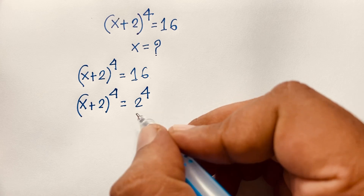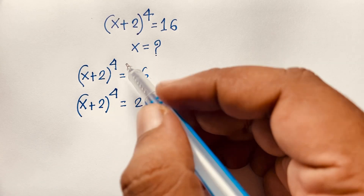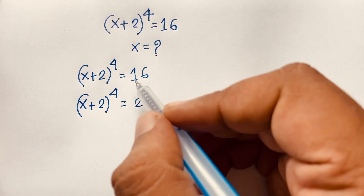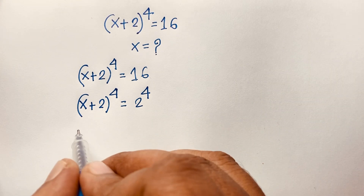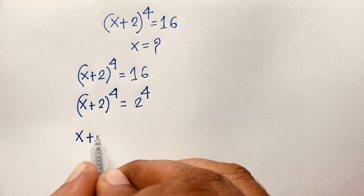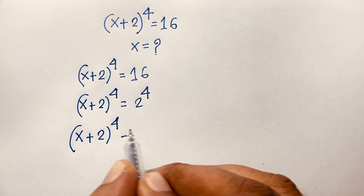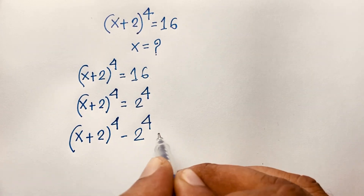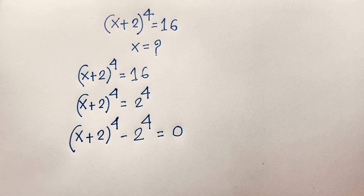So we found one solution, but since we have x to the power 4, we need 4 roots. So we rewrite this as: x plus 2, whole to the power 4, minus 2 to the power 4, equals 0, by subtracting 2 to the power 4 from both sides.